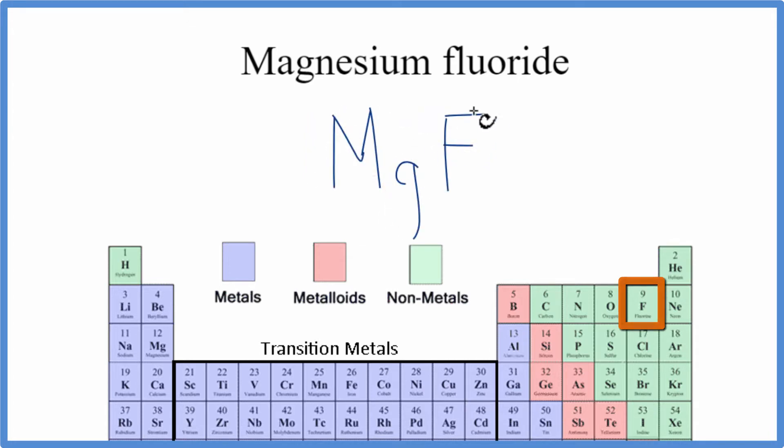Magnesium's a metal, and then fluorine, that's a non-metal. So when we have a metal and a non-metal, it's an ionic compound, and we have to take into account the ionic charge.